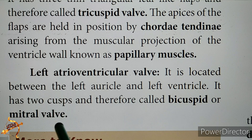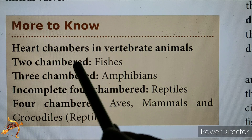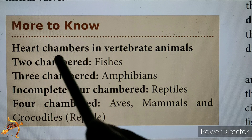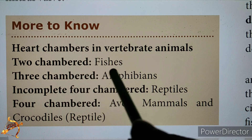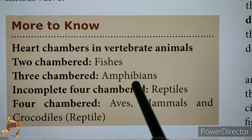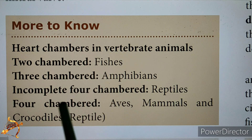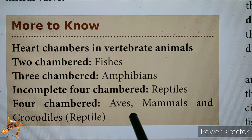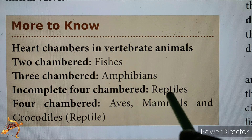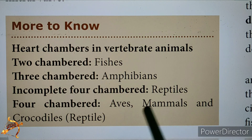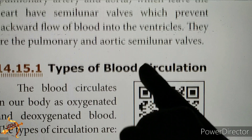The bicuspid valve is also called the mitral valve. For more information, heart chambers in vertebrate animals range from two chambers to three chambers to four chambers — with some incomplete four-chambered hearts in certain animals.